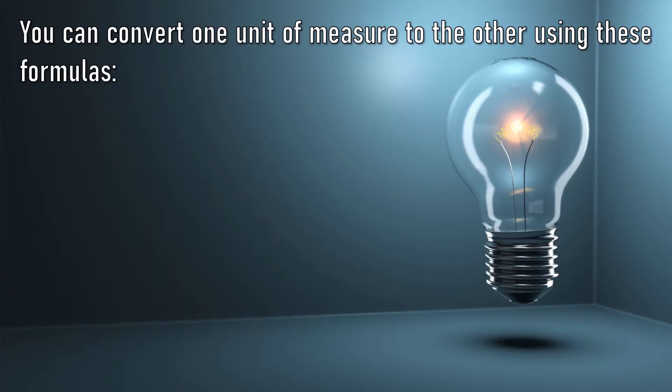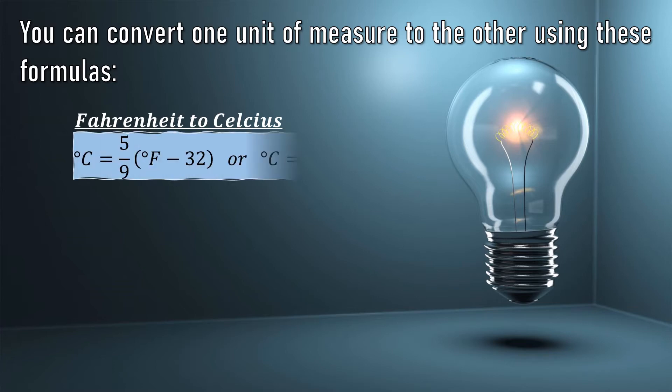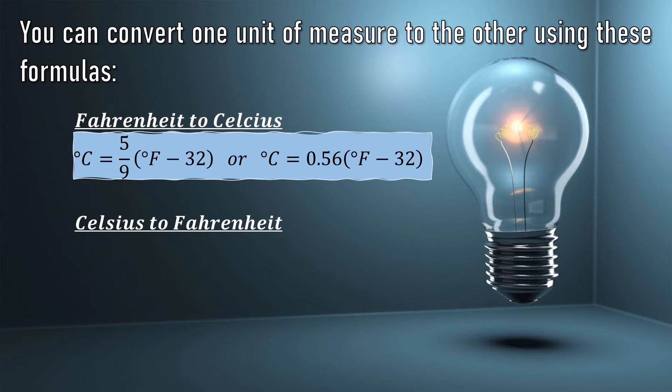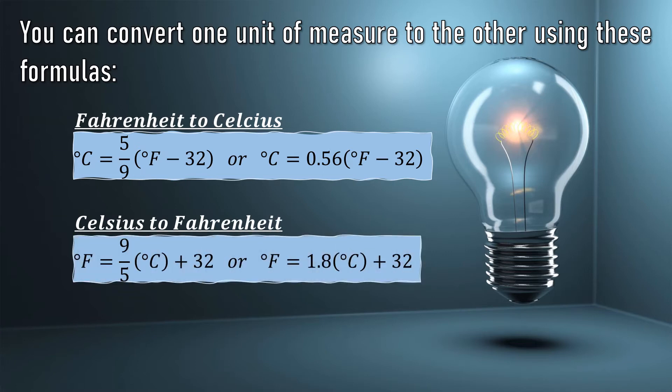You can convert one unit of measure to the other using these formulas. When converting Fahrenheit to Celsius, we use the formula °C = 5/9(°F - 32) or °C = 0.56(°F - 32). Converting Celsius to Fahrenheit, we use °F = 9/5(°C) + 32 or °F = 1.8(°C) + 32. And when solving Celsius to Kelvin, we use K = °C + 273.